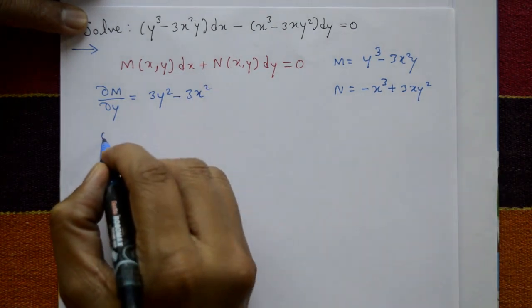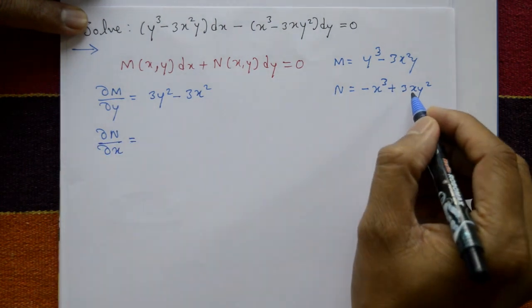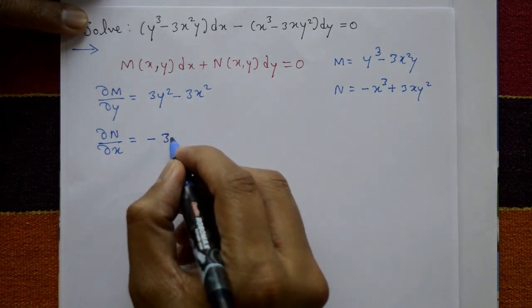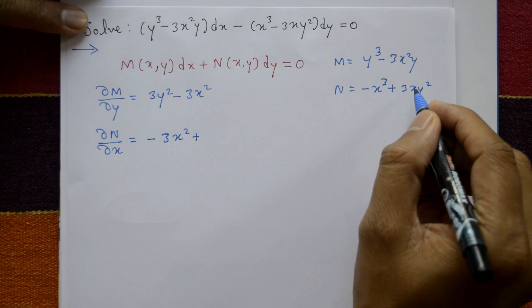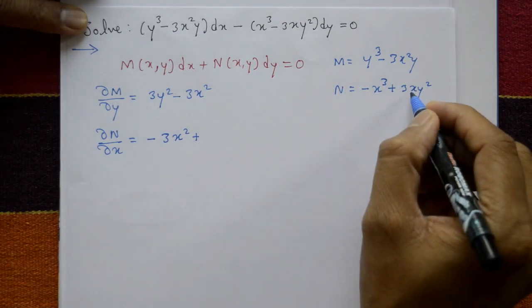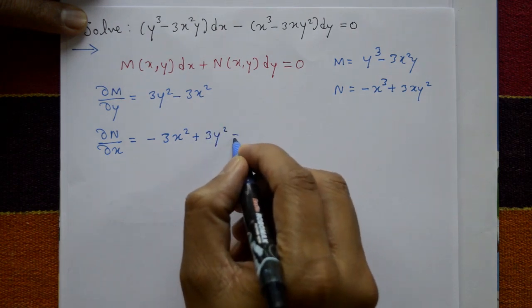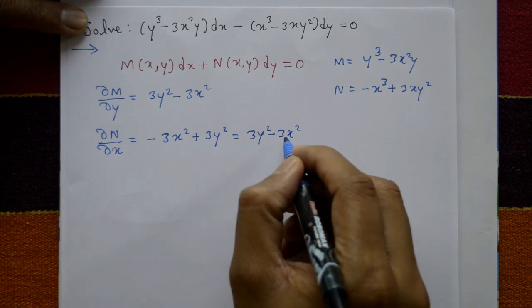Now differentiate N with respect to x partially. Y treated as a constant. Differentiate this one minus 3x square plus 3y square is a constant. Differentiate x is 1, giving minus 3x square plus 3y square. Or 3y square minus 3x square when we arrange it.